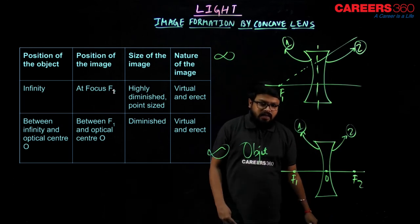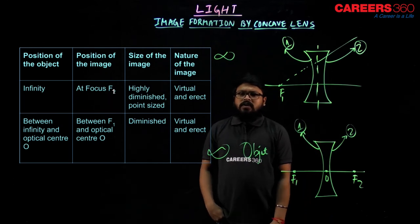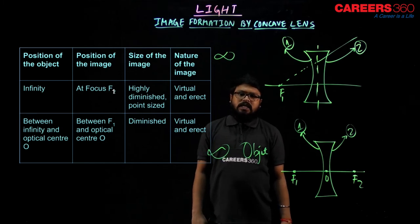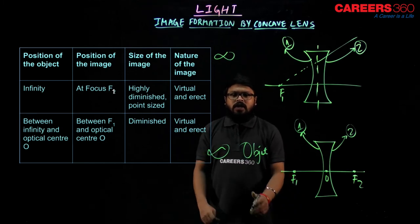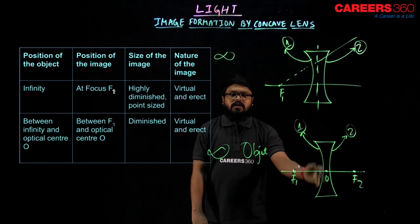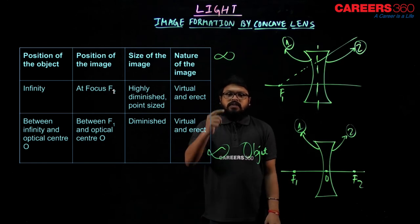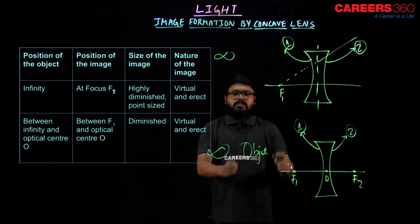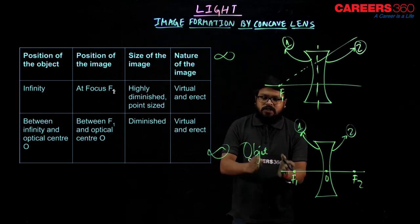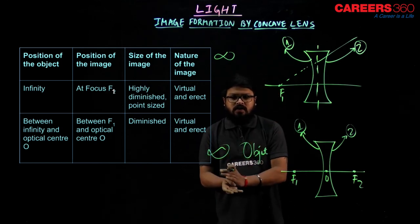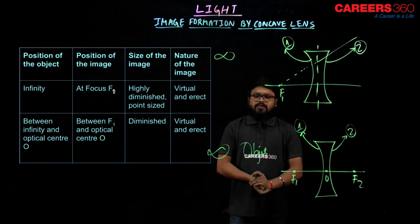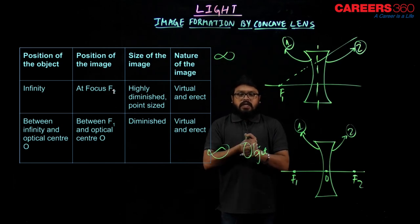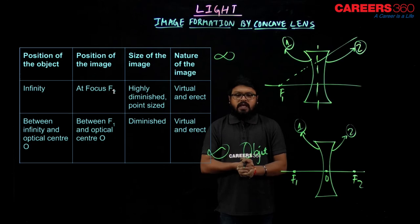The size of the image is always diminished for all positions between infinity and optical center. The nature of the image would be virtual and erect, because it is formed on the same side as that of the object, that is surface 1 of the lens. That was all about image formation by concave lens. Thank you.